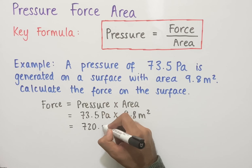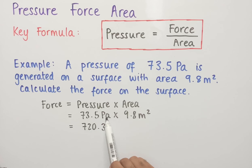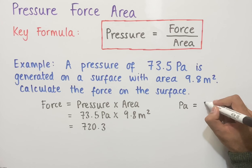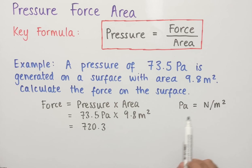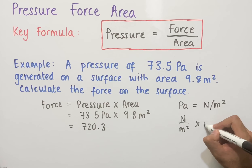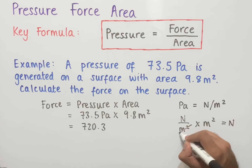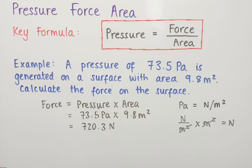For the units, we need to convert pascals into units that cancel with meters squared. Pascals can be written as newtons per meter squared. So newtons per meter squared multiplied by meters squared gives us newtons, since the meters squared cancel. Therefore the force on the surface is equal to 720.3 newtons.